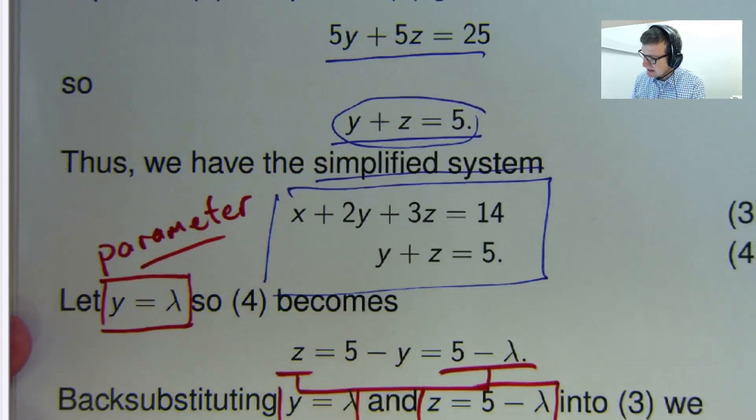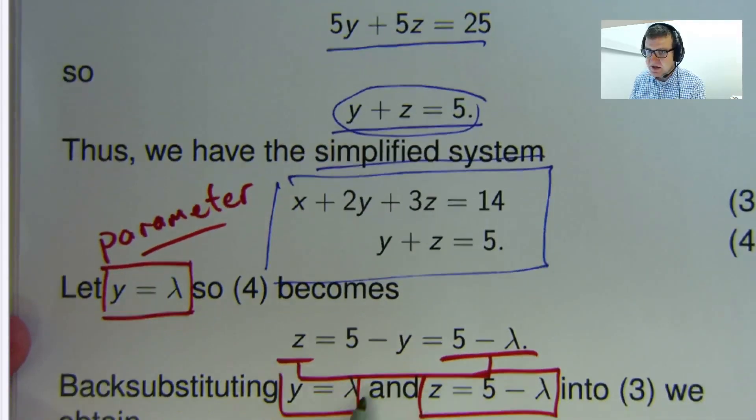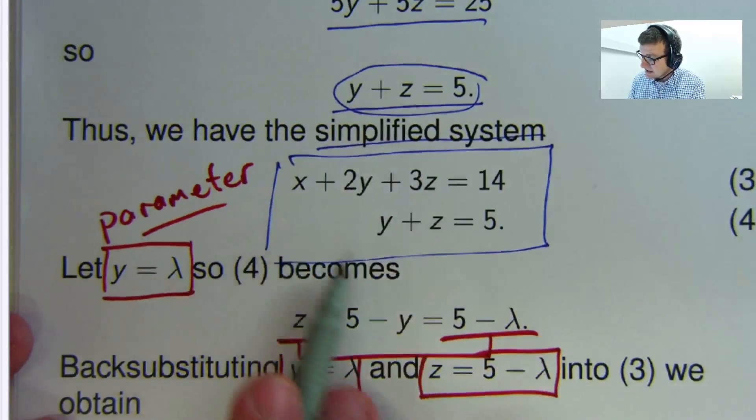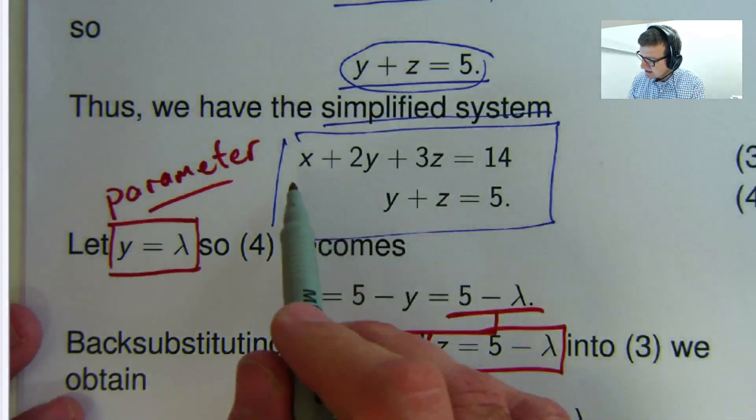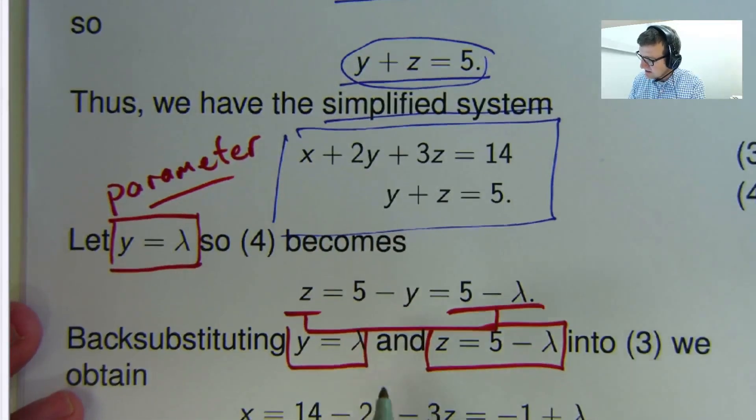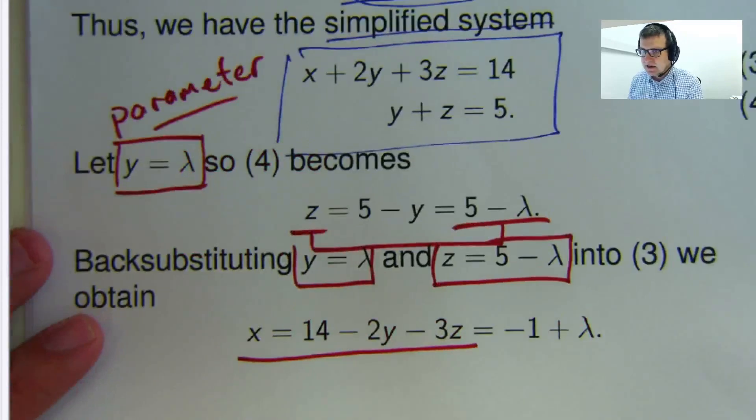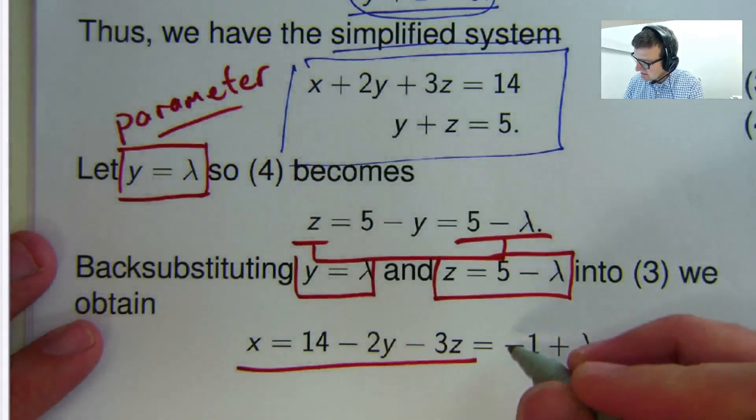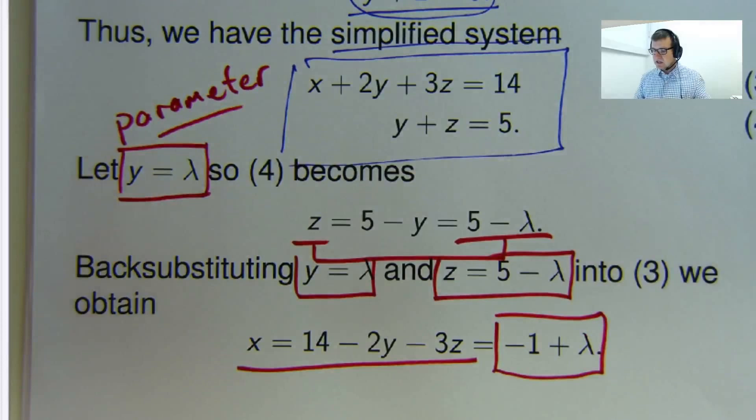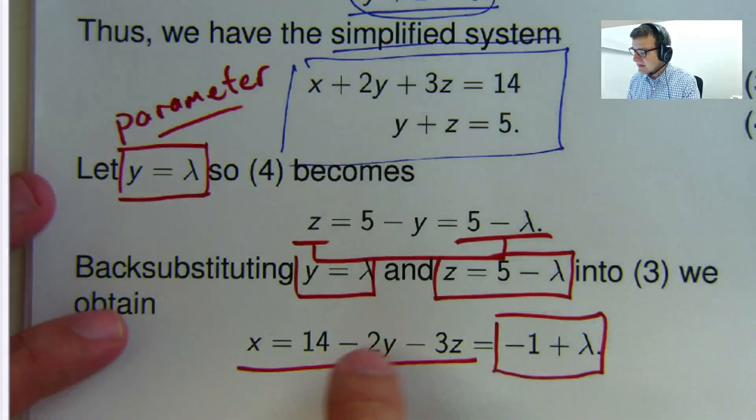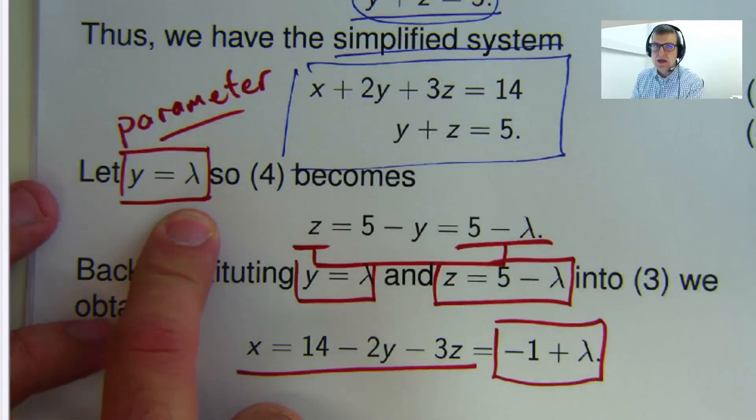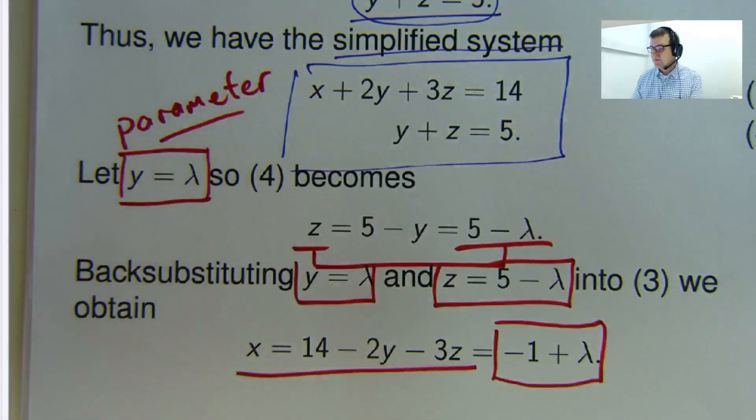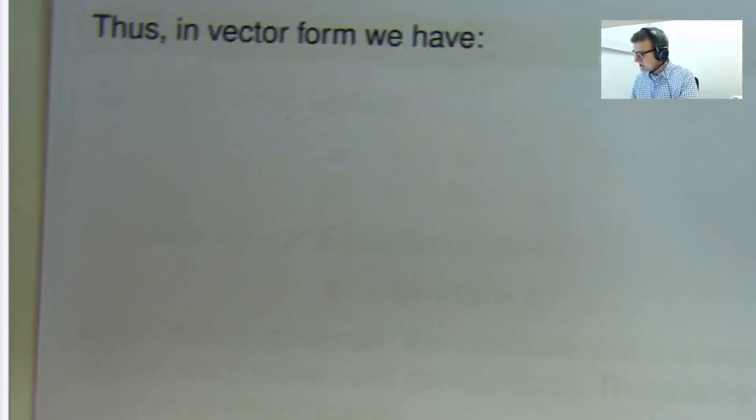So I've got y equals lambda, z equals 5 minus lambda, and I back substitute both of those into this equation here to get x. So I rearrange, make x the subject, and then replace y and z with lambda and 5 minus lambda respectively, and you get this. So what have we got now? We know, we sort of have some intuition here that these two planes are going to intersect along a line because there's one parameter. A line is one dimensional.